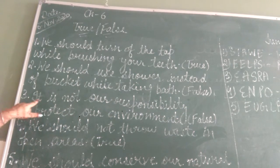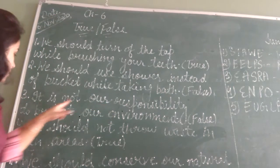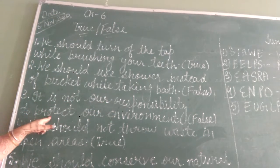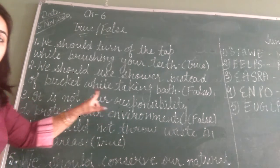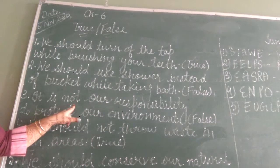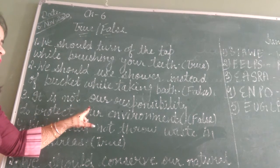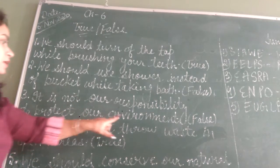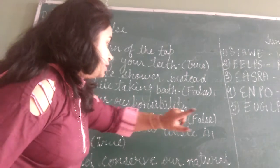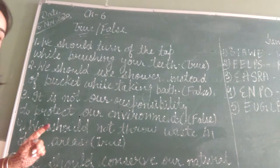Third: it is not our responsibility to protect our environment. हमारे environment को protect करना हमारी responsibility नहीं है. That is false — wrong. हमारी responsibility है.